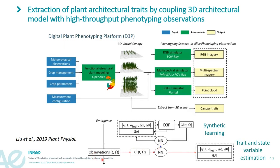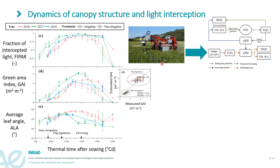The trained neural network can then be used to estimate traits and state variables of the canopies from pseudo observations or real observations. Here I will briefly present some results on the dynamics of canopy structure and light interception for wheat crops grown in the field over different years and different irrigation scenarios.